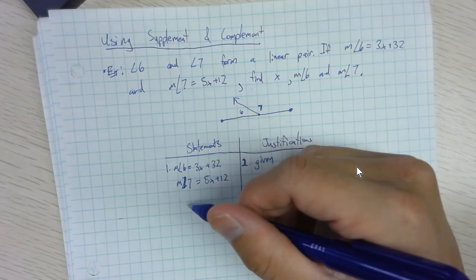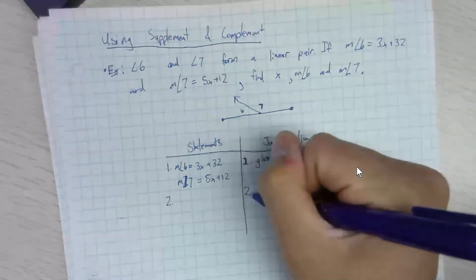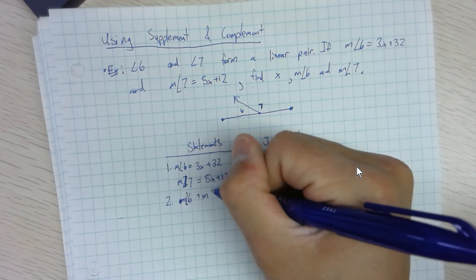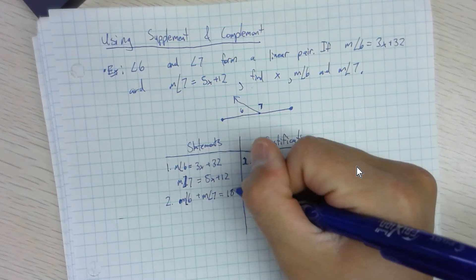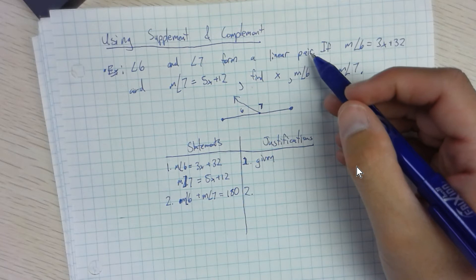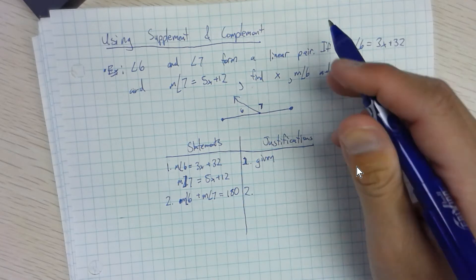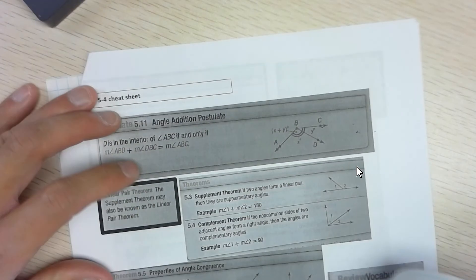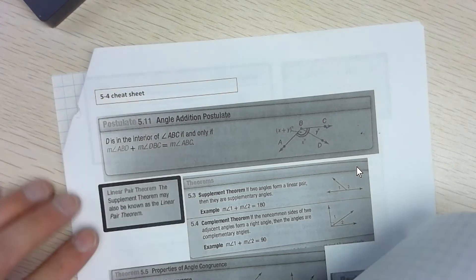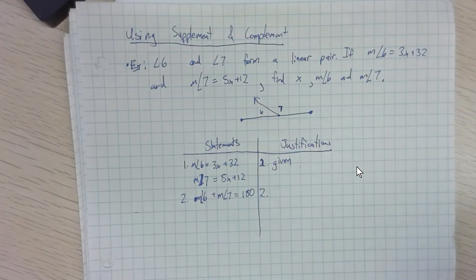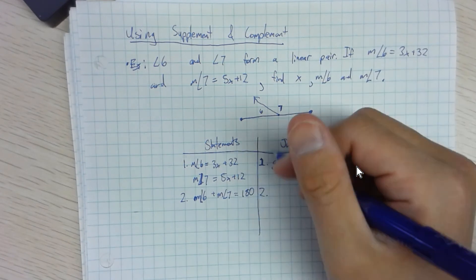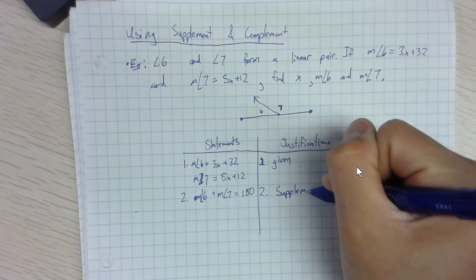Since they form a linear pair, the measure of angle six plus the measure of angle seven equals 180 degrees. That's not just a given statement — we need a justification. There's a theorem that says if two angles form a linear pair, then they are supplementary. So the reason is the supplement theorem.